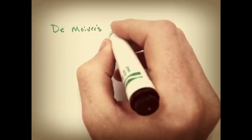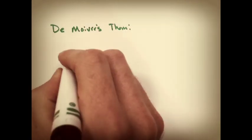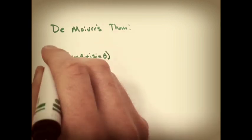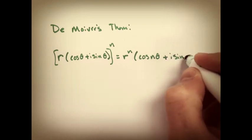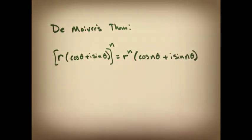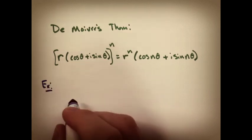A really smart guy a long time ago named Desmoivre, I believe he's French, Abraham Desmoivre, said this works out, and he proved it. If you take a polar complex number to an nth power, all you have to do is take r to the n and multiply theta by n, and you get the correct answer.